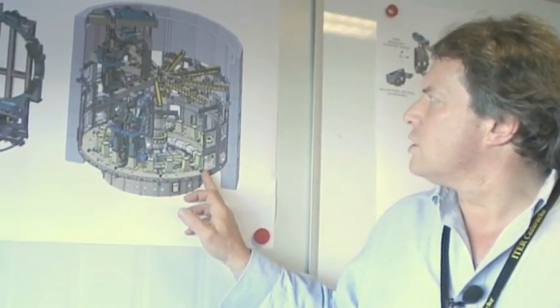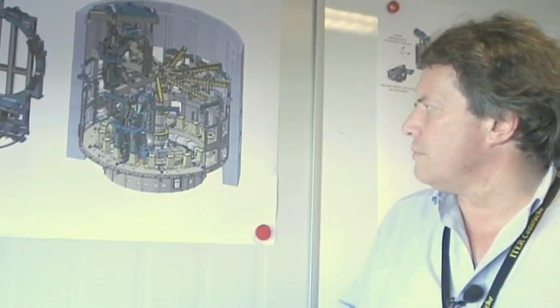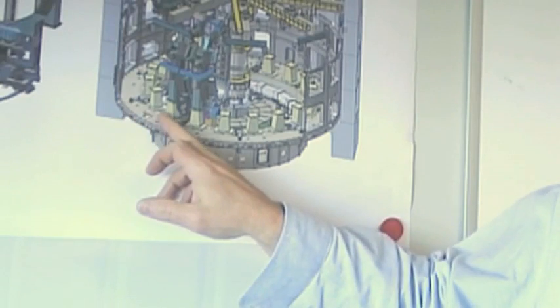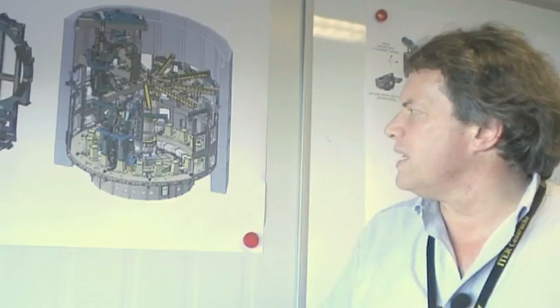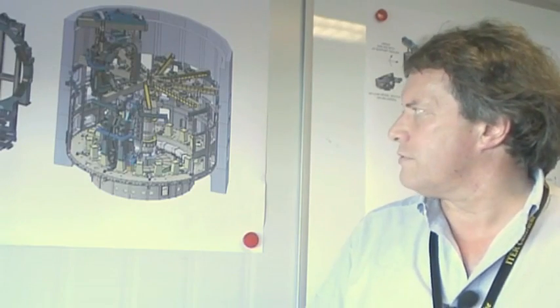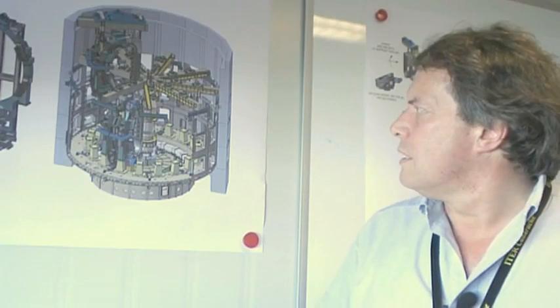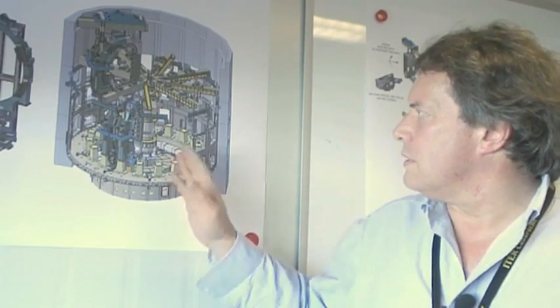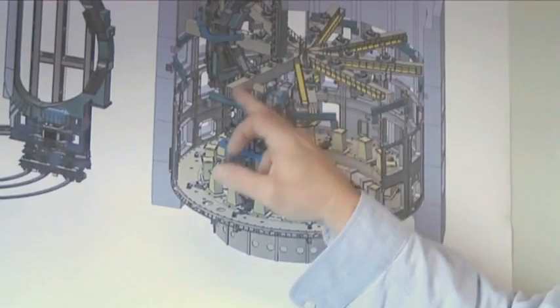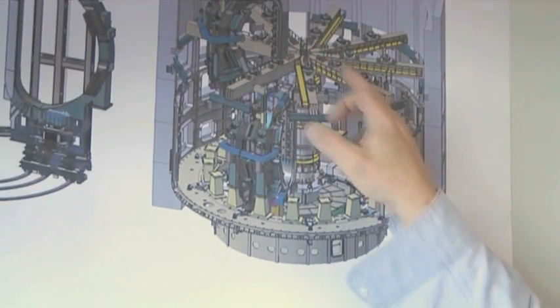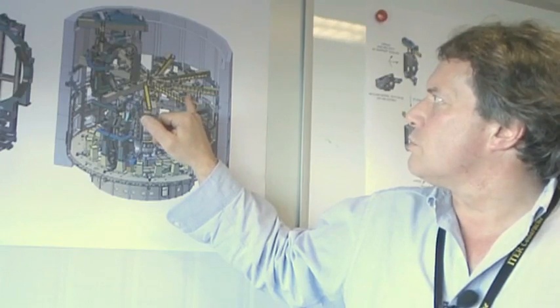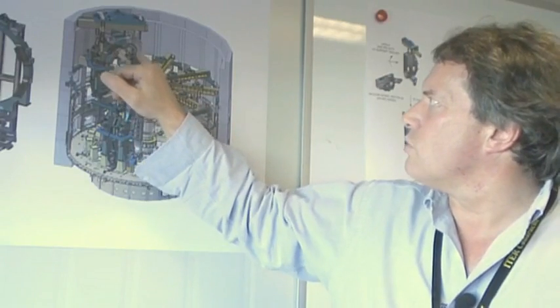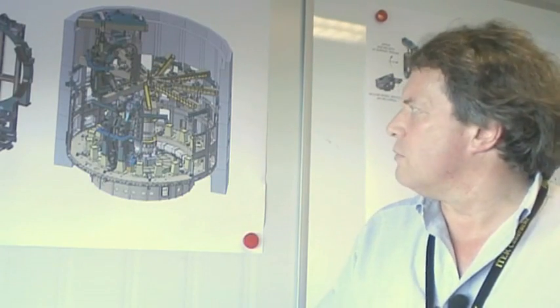So the view on the right shows the configuration in the machine pit. This component here is the biggest and heaviest single piece that we have to handle. The tooling in this context is this central tower and a series of beams which support the TF coils and the vacuum vessel sectors and align them while we assemble them.